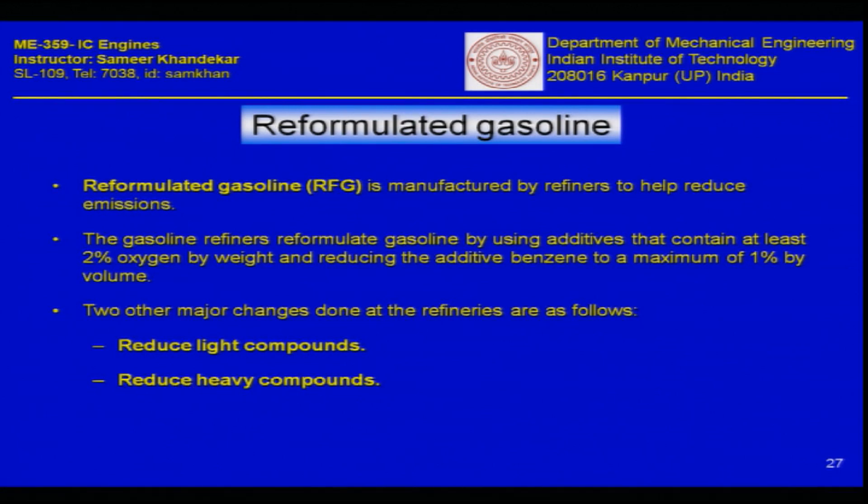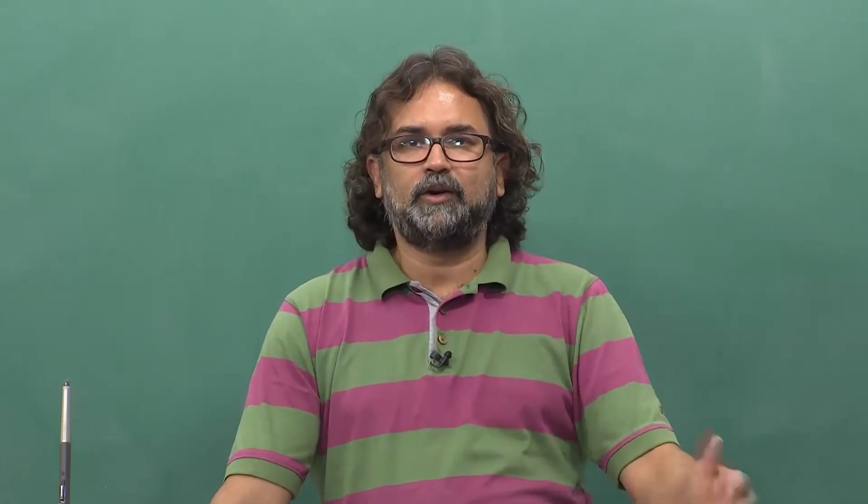The two other major changes done in refineries when reformulating petrol are reducing light compounds and reducing very heavy compounds. From the distillation curve we have seen low, mid, and high temperature volatility. Too many light compounds lead to high losses, starting issues, storage problems, and high Reid vapour pressure. Very heavy compounds are also not easy to burn inside an SI engine given the short available time. Gasolines are reformulated in refineries before shipping to petrol pumps for better combustion characteristics.